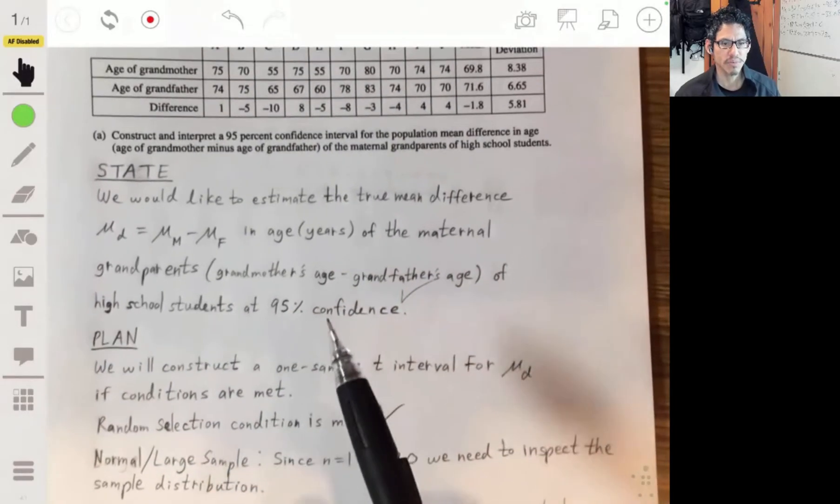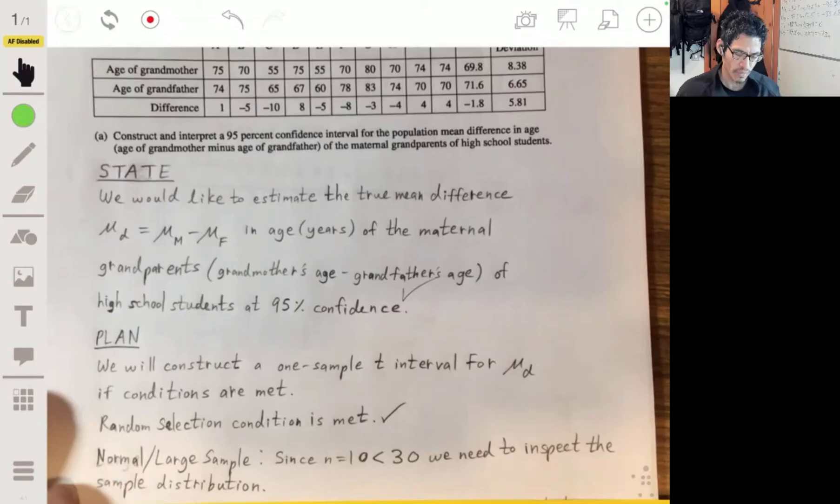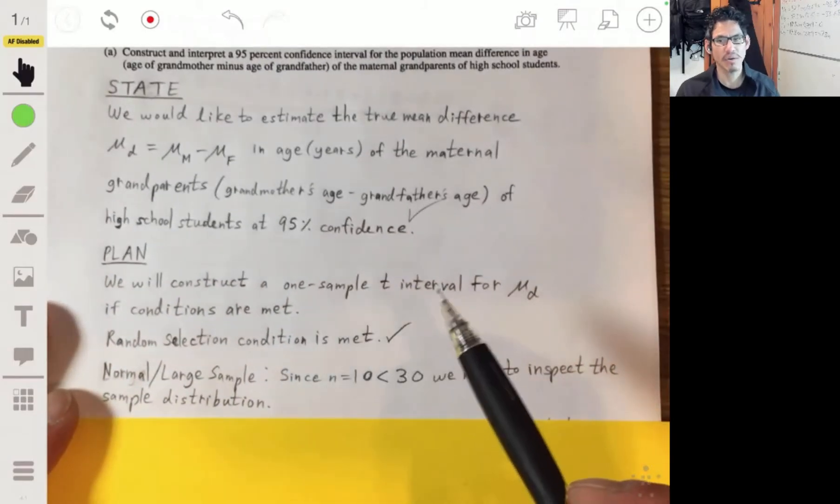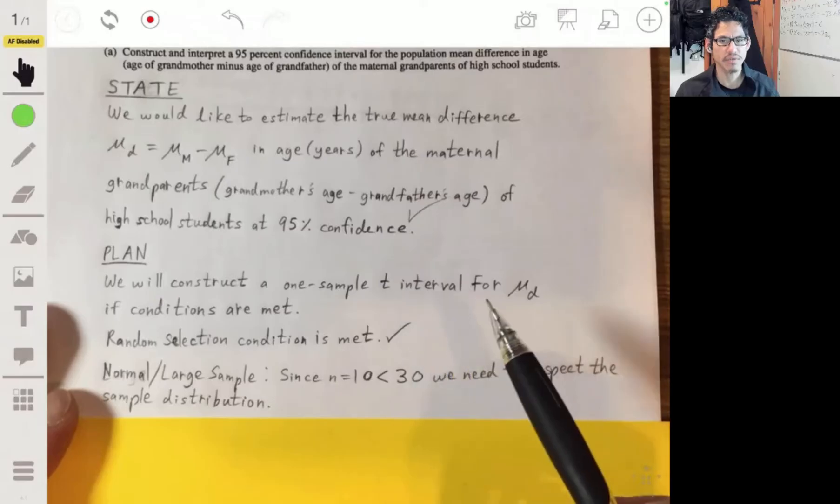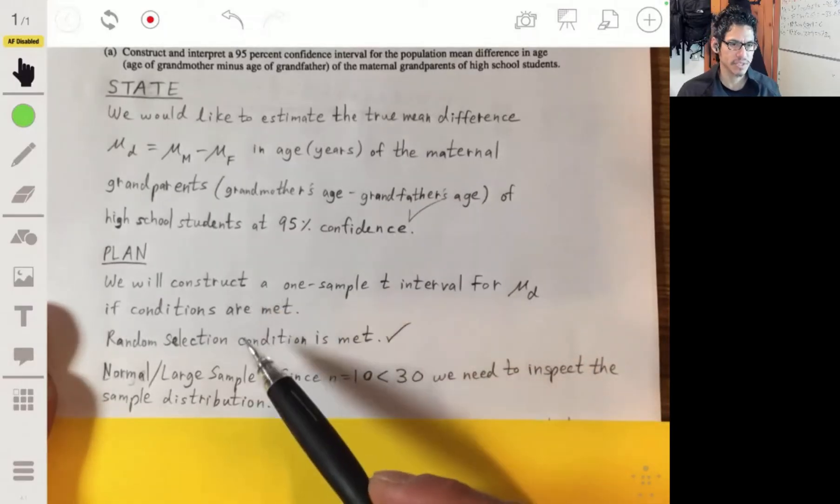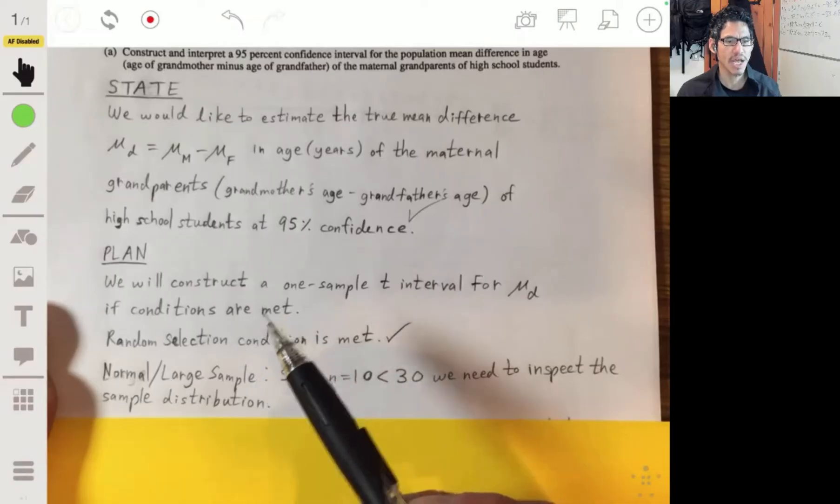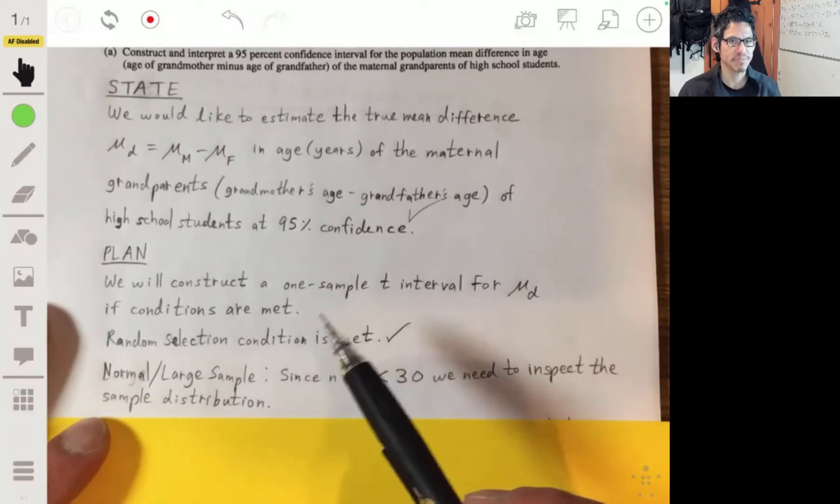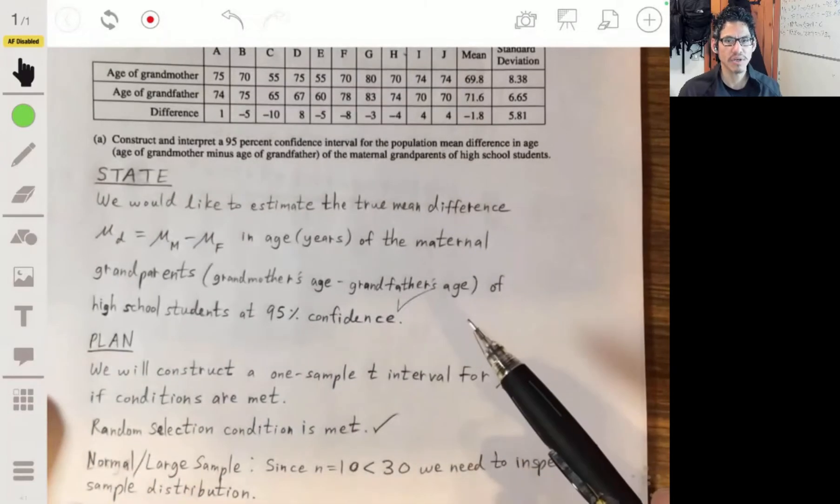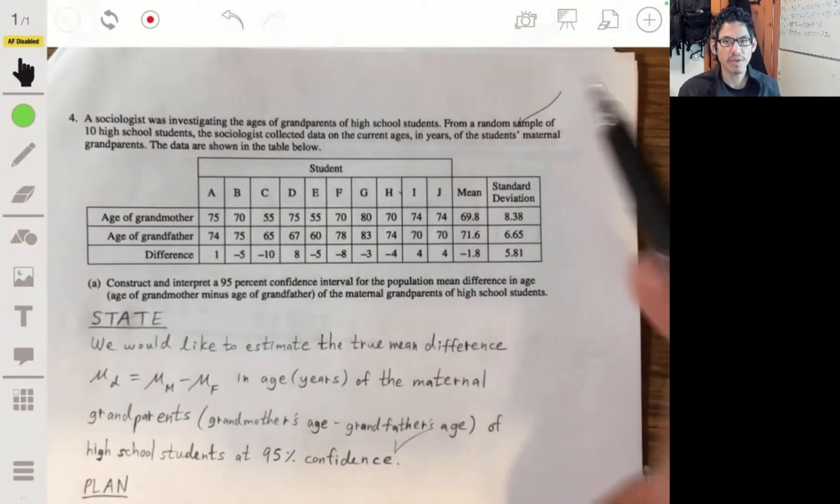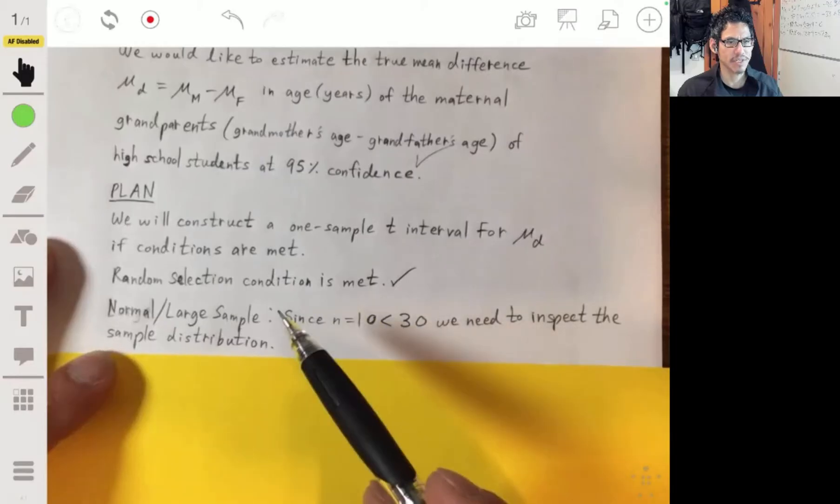So we're going to use a one sample T interval - you don't say a paired T interval - for the true mean difference. And we got to check two conditions, the random condition and the normal large sample condition. The random condition you can just say it's met because basically it tells you. Right here, just make sure you make it clear that you address it.